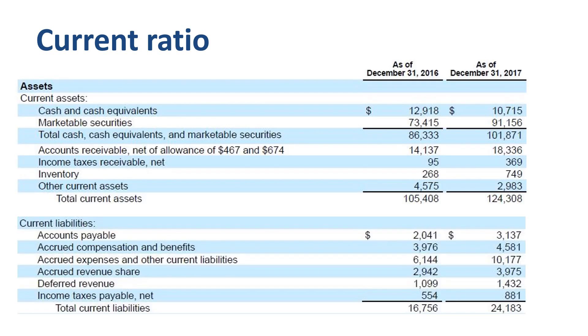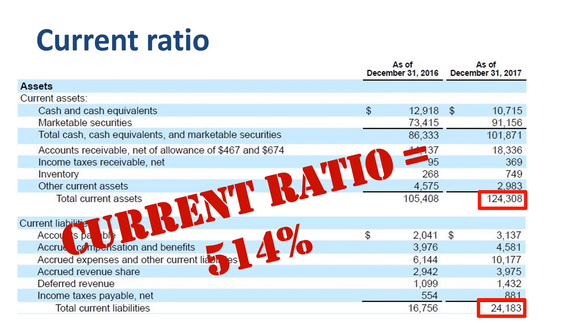The current ratio is one of the ways to connect both sides of the balance sheet. The current ratio looks at current assets versus current liabilities. Current assets are things that are already cash or are likely to become cash within 12 months. Current liabilities are things that need to be paid in cash within 12 months. If the current ratio is high, that means the company has high liquidity. In the case of Alphabet Inc, the current ratio is very high at 514% — $124.3 billion in current assets over $24.2 billion in current liabilities. For every $1 in current liabilities, $5.40 in current assets. If Alphabet Inc owes you money, they are highly likely to be able to pay you.